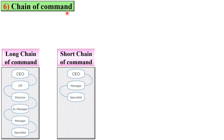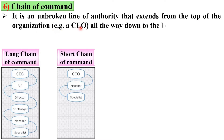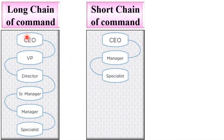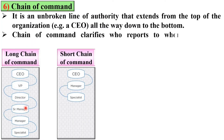Next, chain of command. It is an unbroken line of authority that extends from the top of the organization — that is, the CEO — all the way down to the bottom. If this line of authority is long, it is called a long chain of command; if short, it is a short chain of command. Chain of command clarifies who reports to whom within the organization.